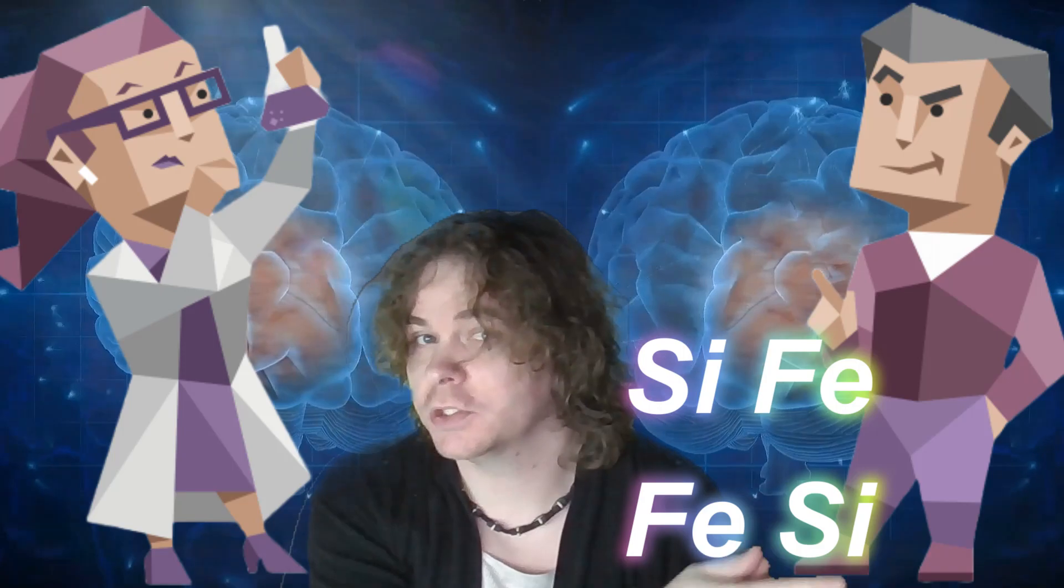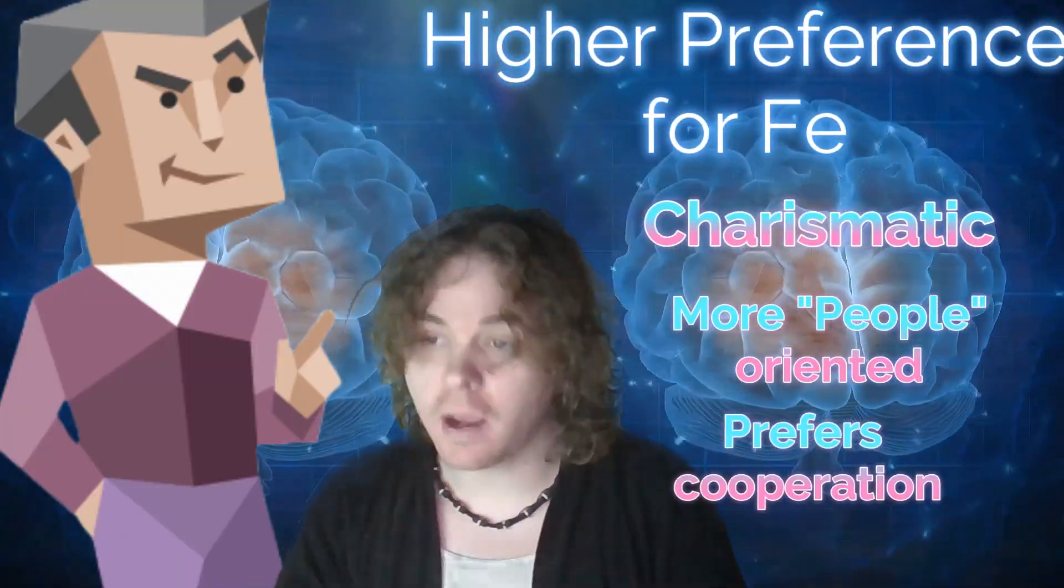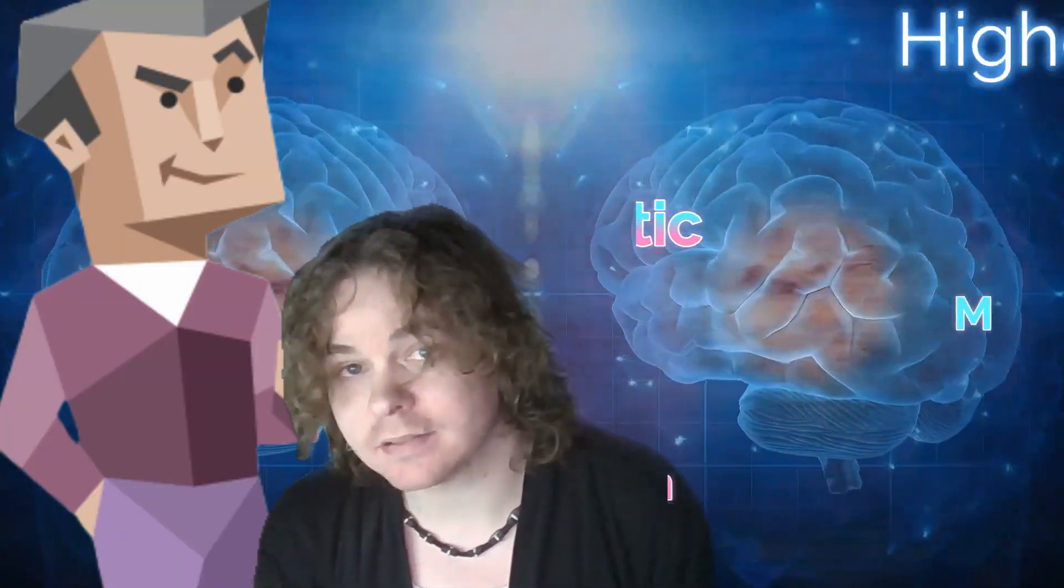So when determining INTP or ENTP, we look at the last two functions rather than the first. ENTPs are comfortable and charismatic in group settings. INTPs are more structured and methodical. ENTPs have an aversion to schedules and commitment. INTPs are socially awkward. And these attributes do change slightly with age.